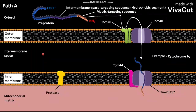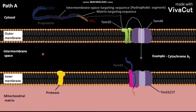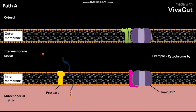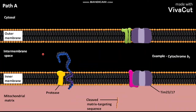The incompletely translocated pre-protein then diffuses laterally away from the TIM23 translocation channel and reaches near the protease. The matrix targeting sequence that was cleaved remains in the mitochondrial matrix. The protease in the membrane then cleaves the protein near the intermembrane space targeting sequence, and as a result, a mature protein in soluble form is released into the intermembrane space.